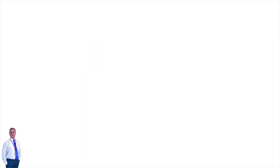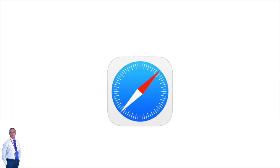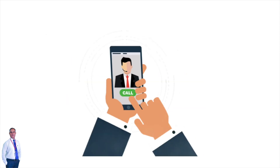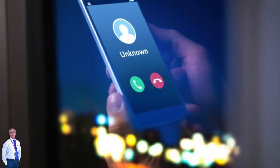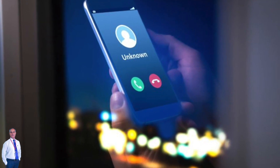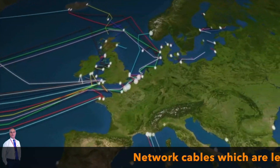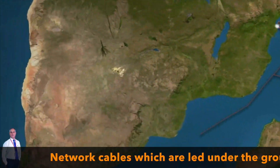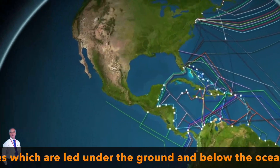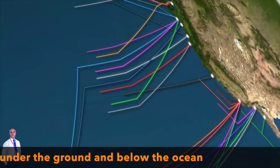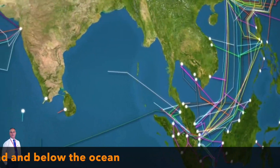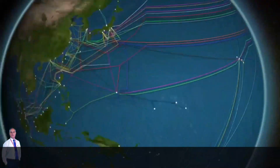Have you ever thought about how you get calls and SMS on your smartphone? Have you ever thought about how you get emails or any other information from any corner of the world within a blink of an eye? This has been made possible by network cables which are laid under the ground and below the ocean. The cables which carry most of the world's data are Optic Fibre cables. Let's learn how Optic Fibre works and how they have reorganized the world around us.